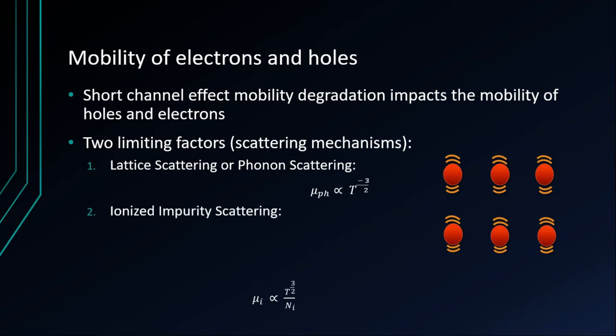The second one is ionized impurity scattering. This is because of the dopant atom. Since the dopant atom gets ionized in the crystal lattice, there could be an electron-electron or an electron-hole scattering that happens. As you can see in this figure, if an electron is passing nearby a positive ion, then the positive ion attracts that electron, which disrupts its velocity. The mobility of ionized impurity scattering is proportional to the temperature. It is directly proportional to the temperature. As the temperature increases, the mobility also increases of ionized impurity scattering. But as the doping increases, the mobility decreases.